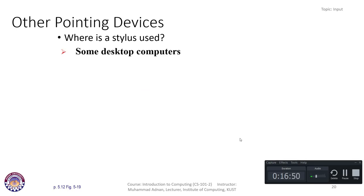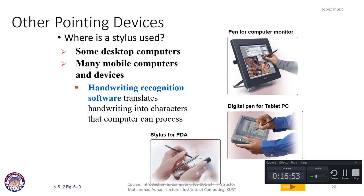Styluses are used in some desktop computers — examples include a pen for a computer monitor, a digital pen for a tablet PC, and a stylus for a PDA. Handwriting recognition software translates handwriting into characters the computer can process. You can use these styluses for handheld recognition, insert your signature, click menus and sub-menus, and give different types of commands to the computer system.